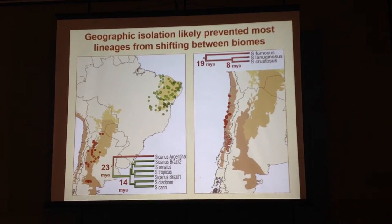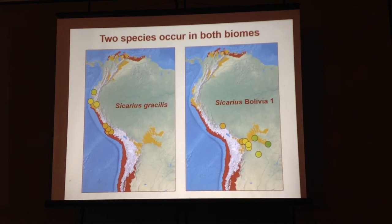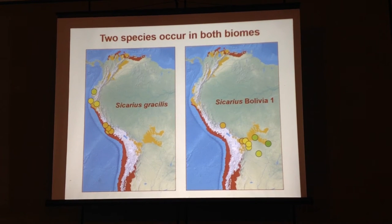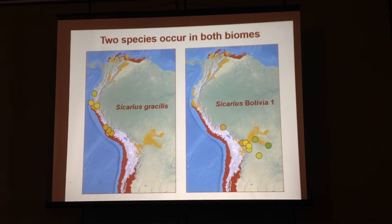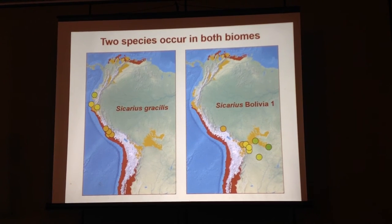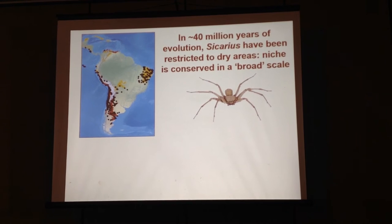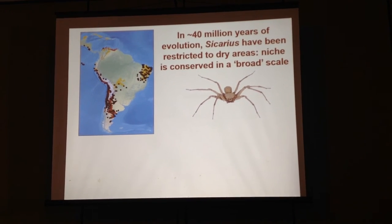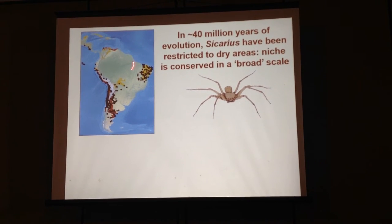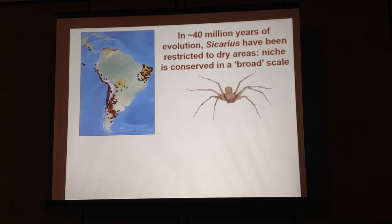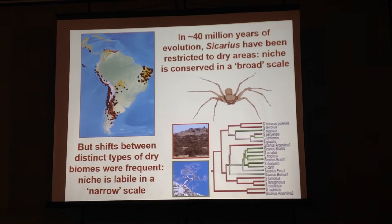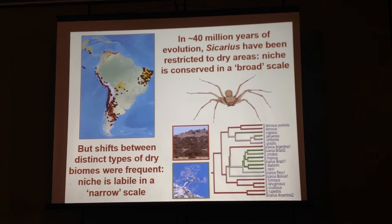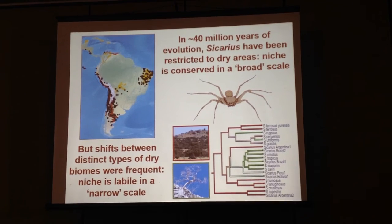The other evidence I have is that there are two species which are capable of occupying both biomes, and they occur precisely in the regions where the two biomes touch. What I conclude from that is that 40 million years of evolution in the neotropical region have not allowed them to colonize other types of non-arid habitats. So we can think that the niche is conserved at a broad scale. But at a more narrow scale, the shifts between distinct types of dry biomes were free — they could change between deserts and dry forests many times. So at a more narrow scale, the niche can be thought of as labile.